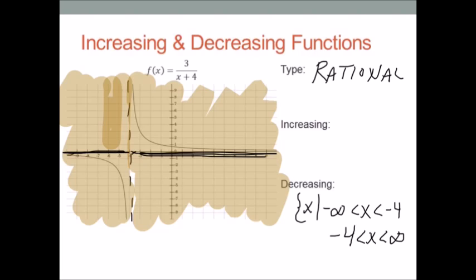You might ask, why can't I just decrease from negative infinity to positive infinity? The reason is I don't increase or decrease on that dashed line at all — there's no graph there. So I'm really dealing with two separate decreasing intervals. To tie these two inequalities together, I put a union symbol — U — between them: x such that from negative infinity to negative 4, union, from negative 4 to positive infinity. And it doesn't increase at all, so I put not applicable for increasing.